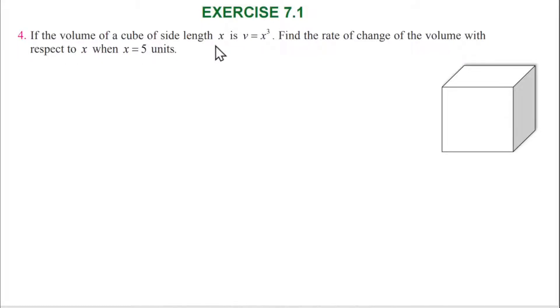If the volume of cube of side length x is V equals x cube, find the rate of change of volume with respect to x when x is equal to 5 units. So one cube, side length x is equal to x.